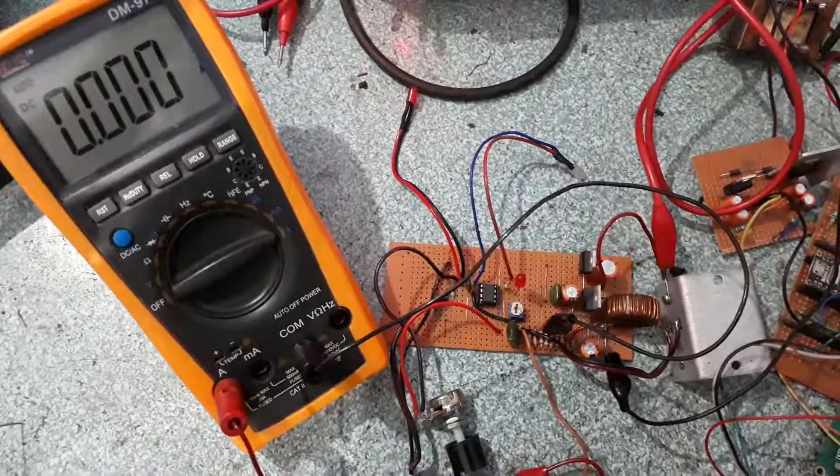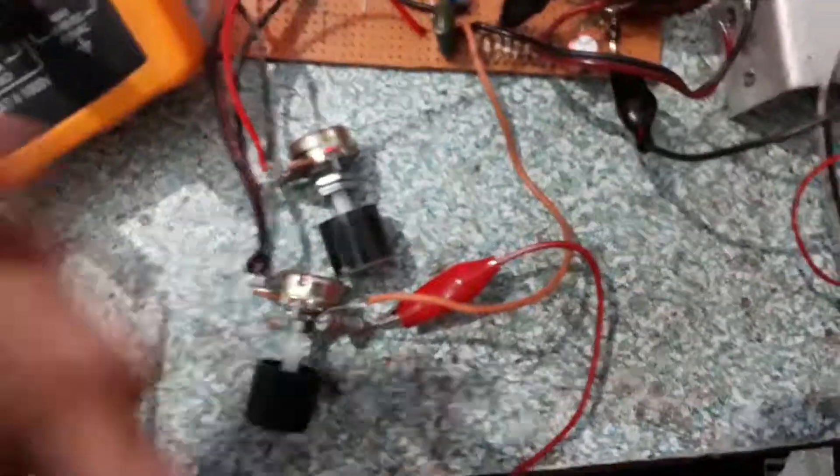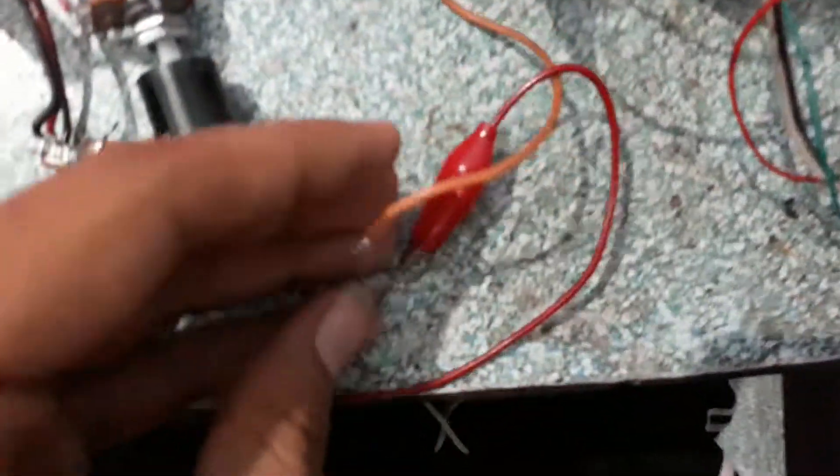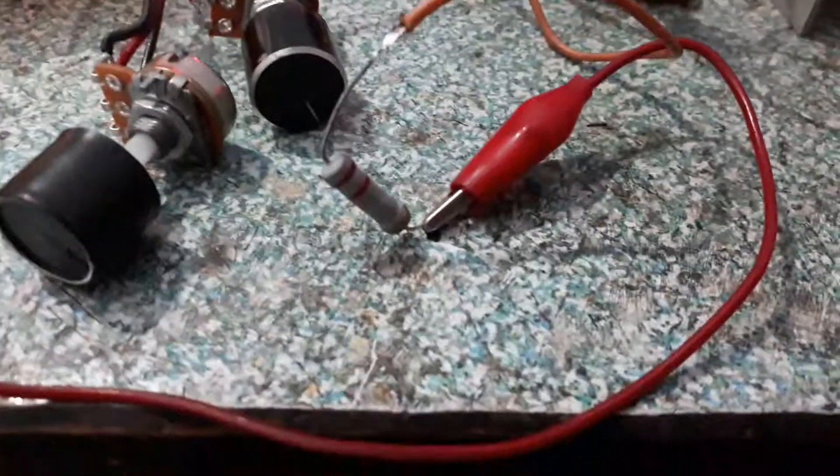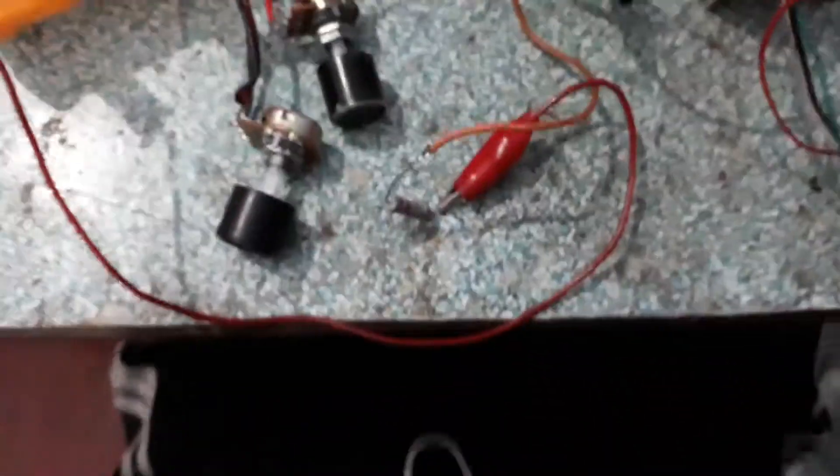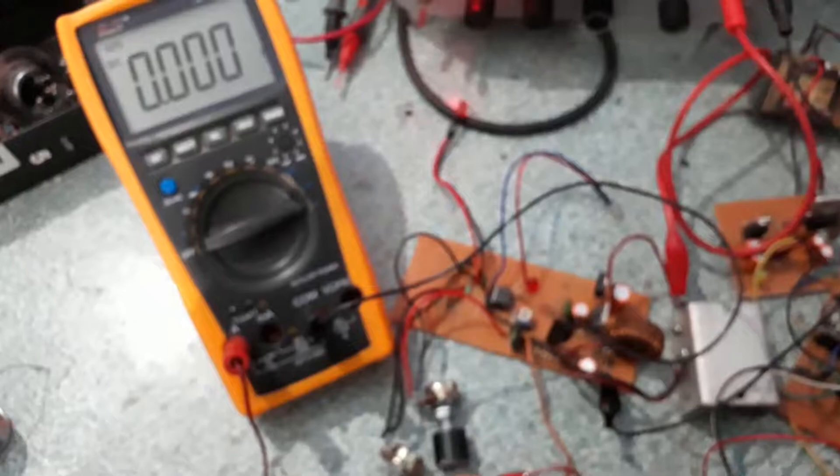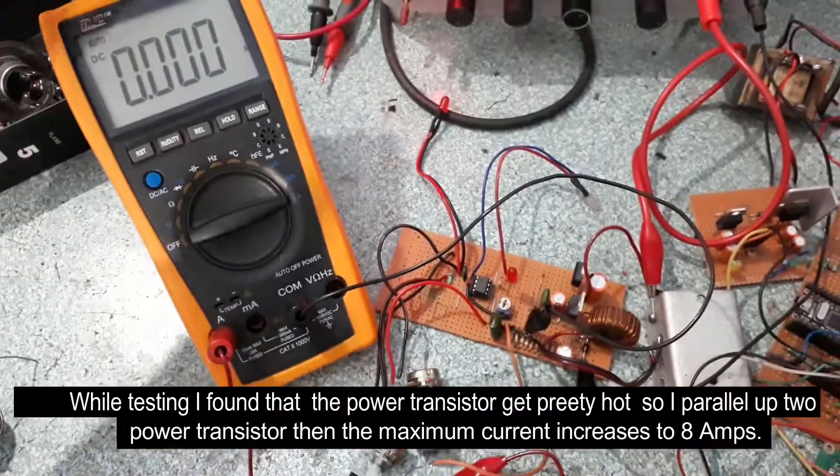After completing the circuit on a stripboard, I had connected a 2.2 ohm resistor as a load. And my DMM is set to current and it is connected in series with the load. Now I'm going to increase the current towards its maximum limit.